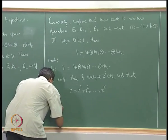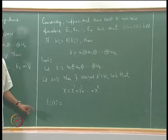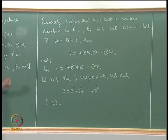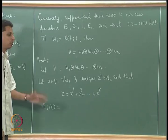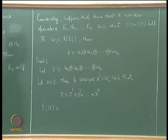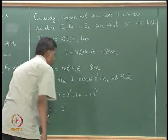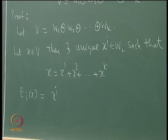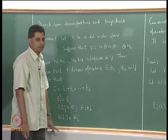Any vector x equals x1 plus x2 plus ... plus xk — there is a unique decomposition — where the first term comes from W1, the second from W2, ..., the last from Wk. There is an order in which we write the terms. Given a vector x I will look for its unique decomposition in this manner. For each Ei I define Ei of x to be xi, the ith term in this representation.